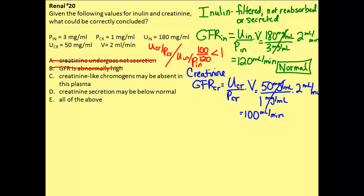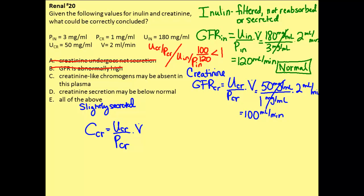We need to step back and think about why we can normally use creatinine and what could go wrong. Creatinine is filtered, much like inulin, but it is also slightly secreted as it passes through the nephron. Theoretically, this secretion increases the urine concentration of creatinine and decreases the plasma concentration, which would tend to overestimate the GFR. This slight secretion is normal.